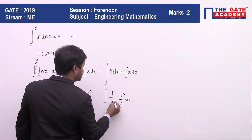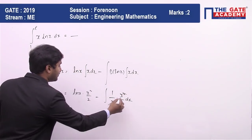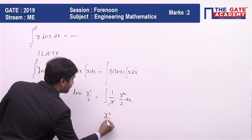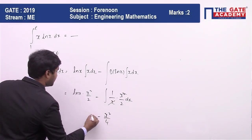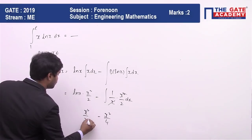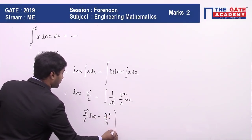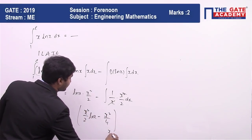So x gets cancelled out, and we are going to have x²/4 minus (x²/2)ln(x), where the value of x is going to vary from 1 to e.